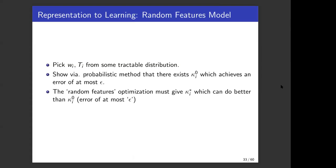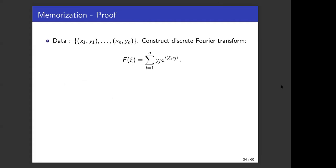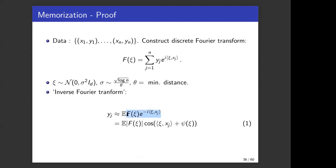We will apply this to the memorization problem which is a simple problem to explain our correction phenomena. Suppose we have labeled data points x_1, y_1 to x_n, y_n where x_i is a point in the sphere in d dimensions and y_i is the corresponding arbitrary label. We do not assume any structure on the labels or on the data. They're completely arbitrary as long as they're on the sphere and the distance between them is theta, minimum distance is theta. We construct the discrete Fourier transform as shown here.